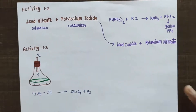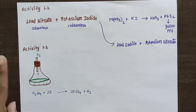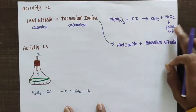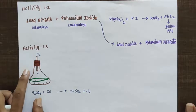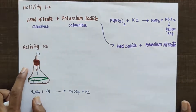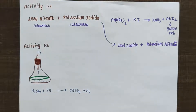Now moving on to the next activity. You have to note this — it's very important. The equation needs to be balanced; we will be discussing balancing in the upcoming concepts. It's very important and very simple to balance this. If you are able to balance this, you can let me know in the comment section. Now moving on to activity 1.3.